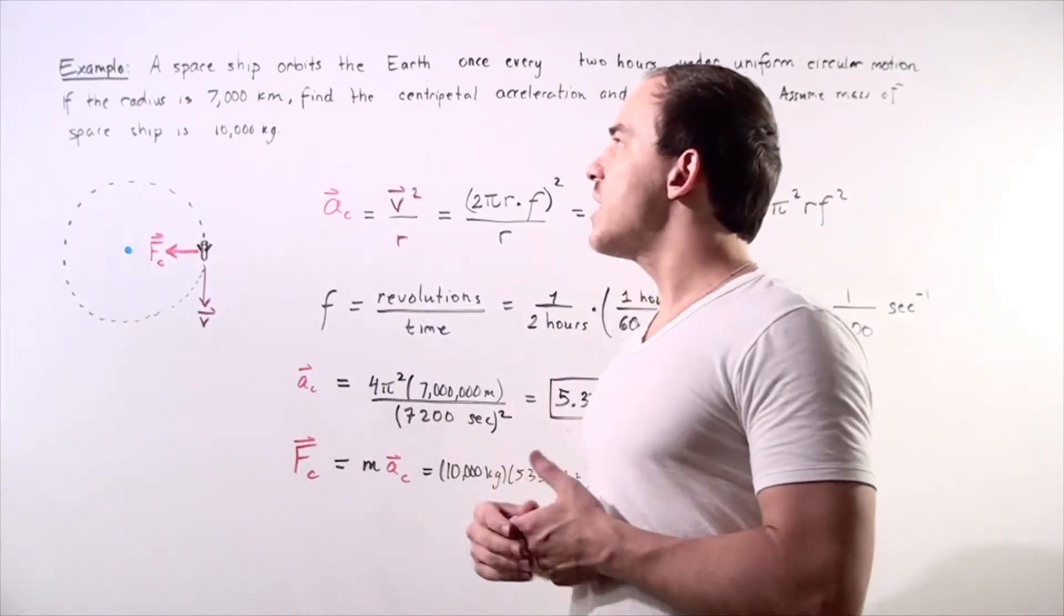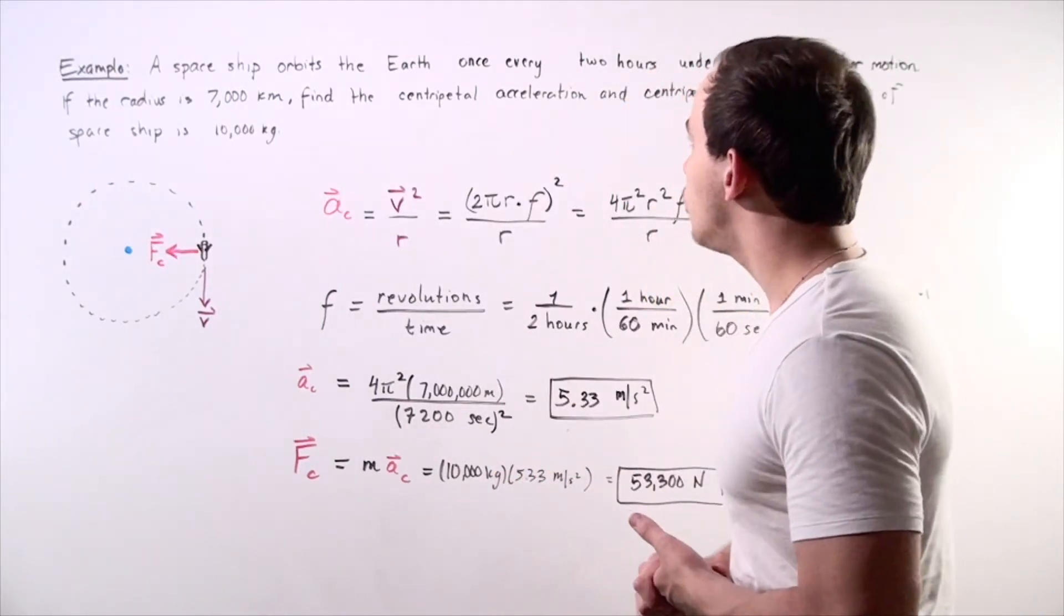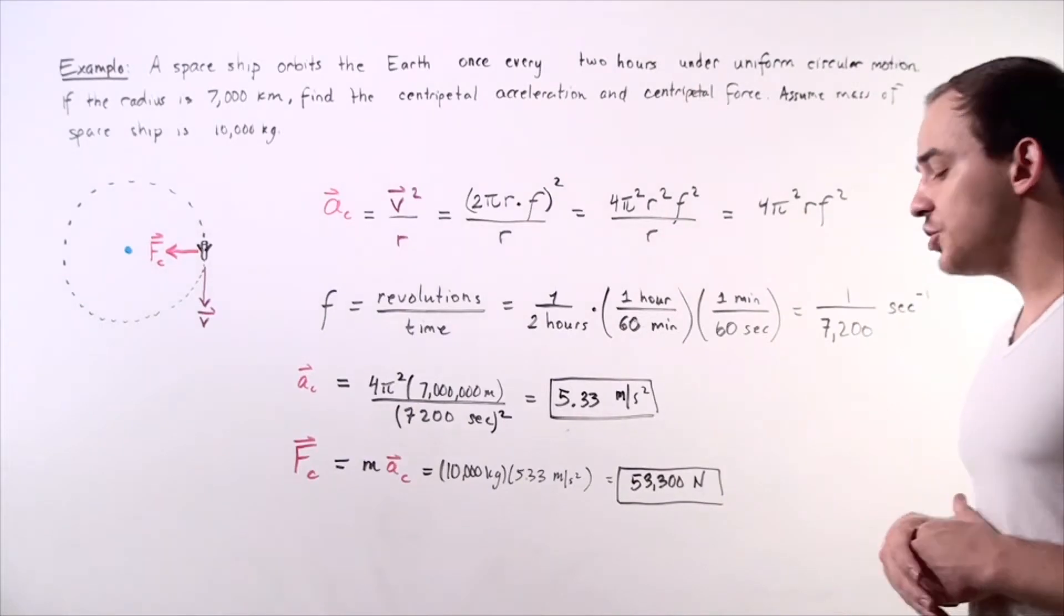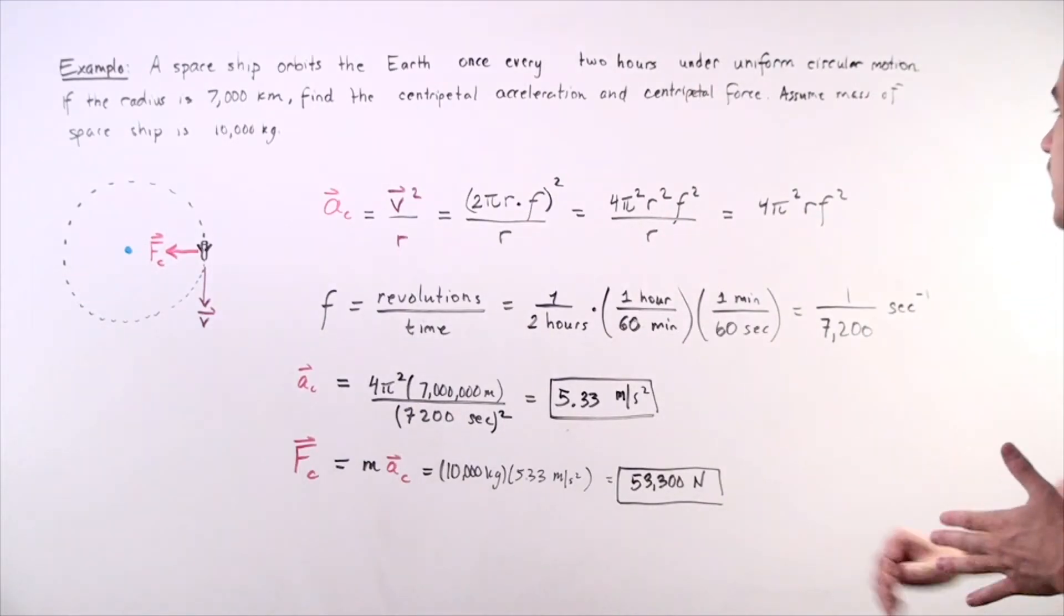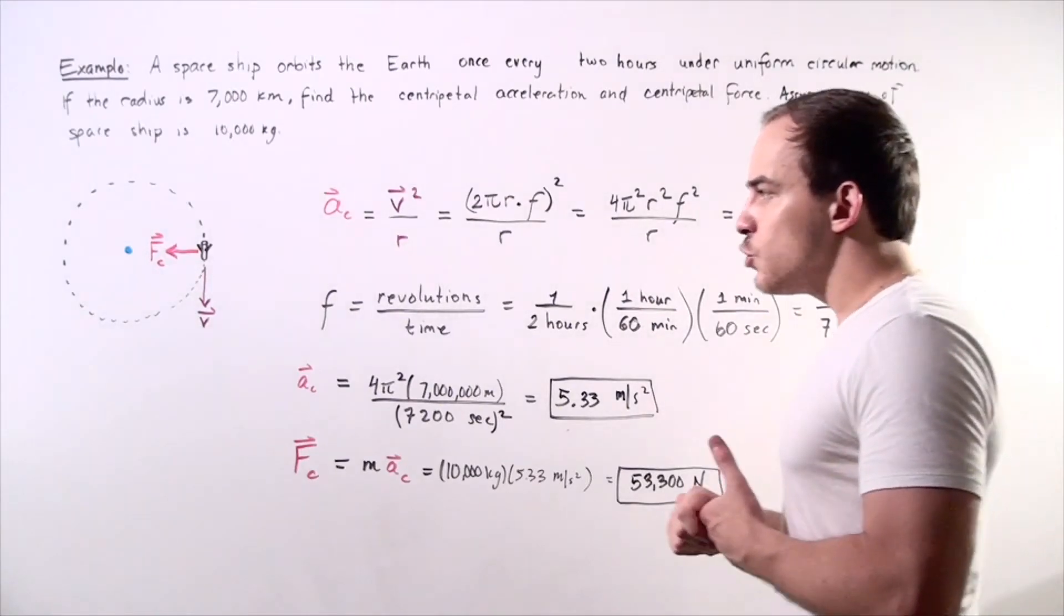Let's suppose that a spaceship orbits the Earth once every two hours under uniform circular motion. Uniform circular motion simply means two things.